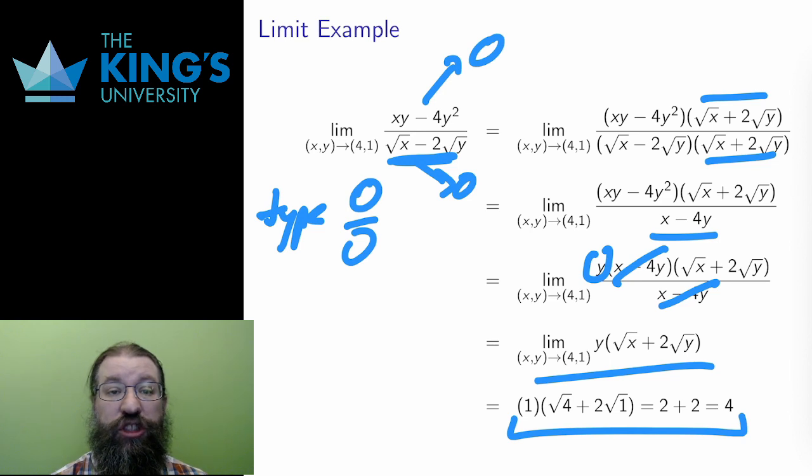The point of these two examples is to show that, even though there are both x's and y's, many of the same algebraic techniques that we use for single variable limits still hold.